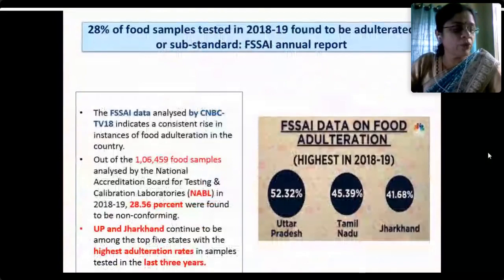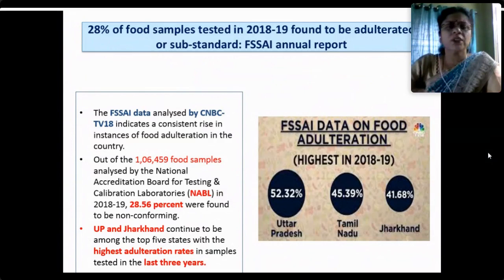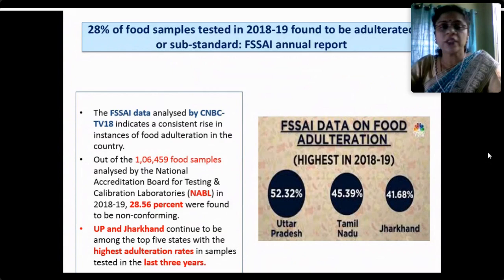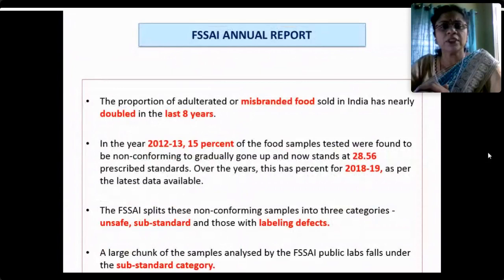According to the latest FSSAI report for 2018–19, analyzed by CNBCTV18, 28.56% of the food samples tested were found to be non-conforming. Nearly 1,06,459 food samples were tested through NABL labs. Uttar Pradesh and Jharkhand continue to be among the top five states with the highest adulteration rates over three years. Tamil Nadu ranks second with 45%, and Jharkhand with 41%. The proportion of adulterated or misbranded food has doubled in eight years — in 2012–13 only 15% of samples were non-conforming.